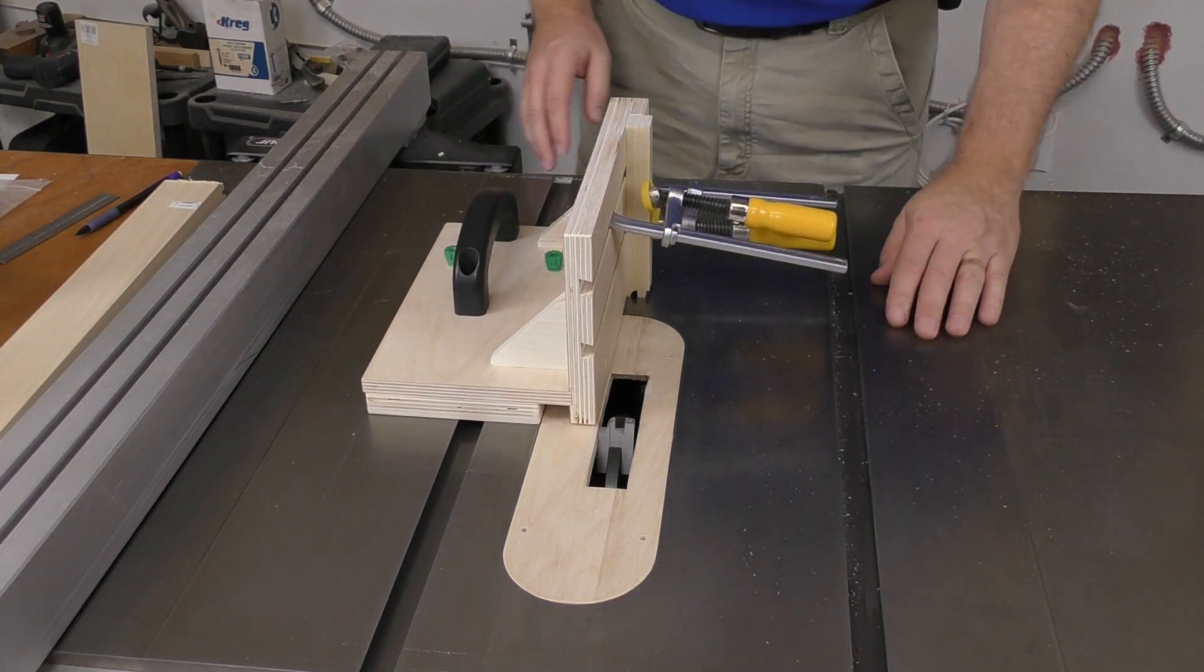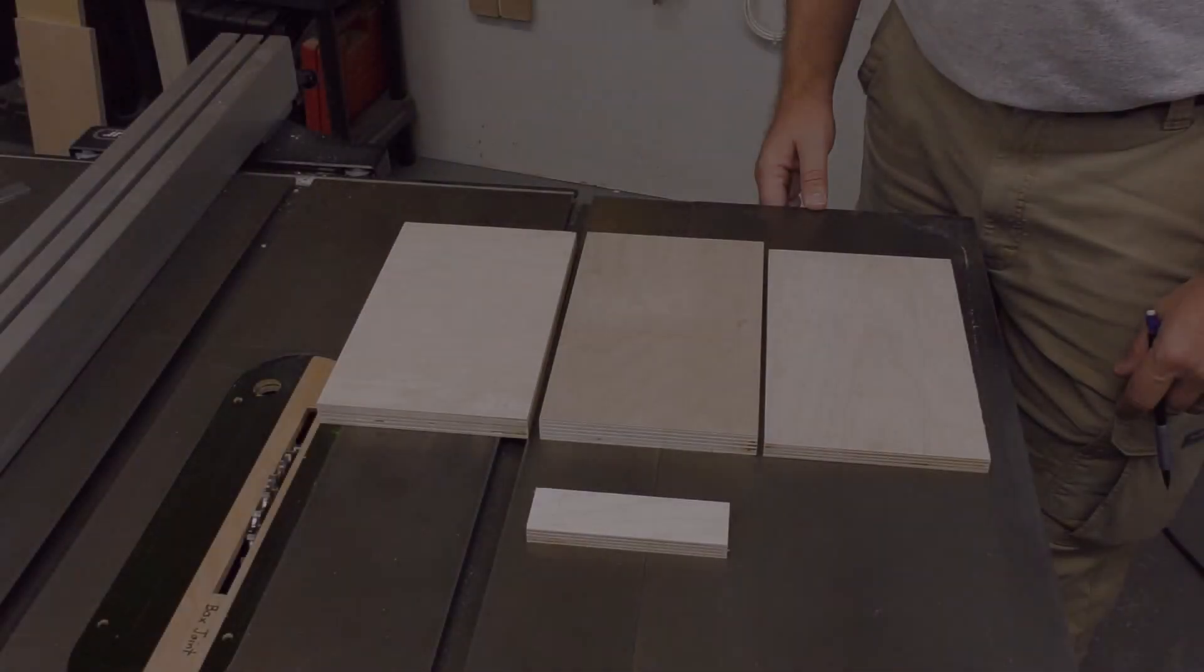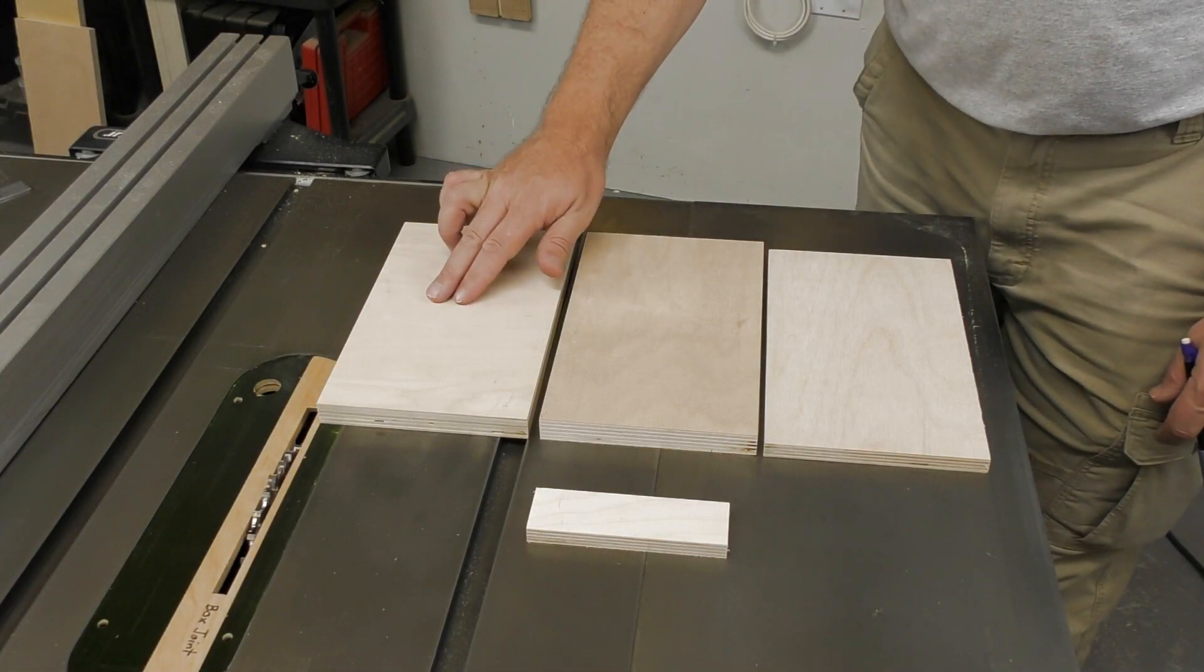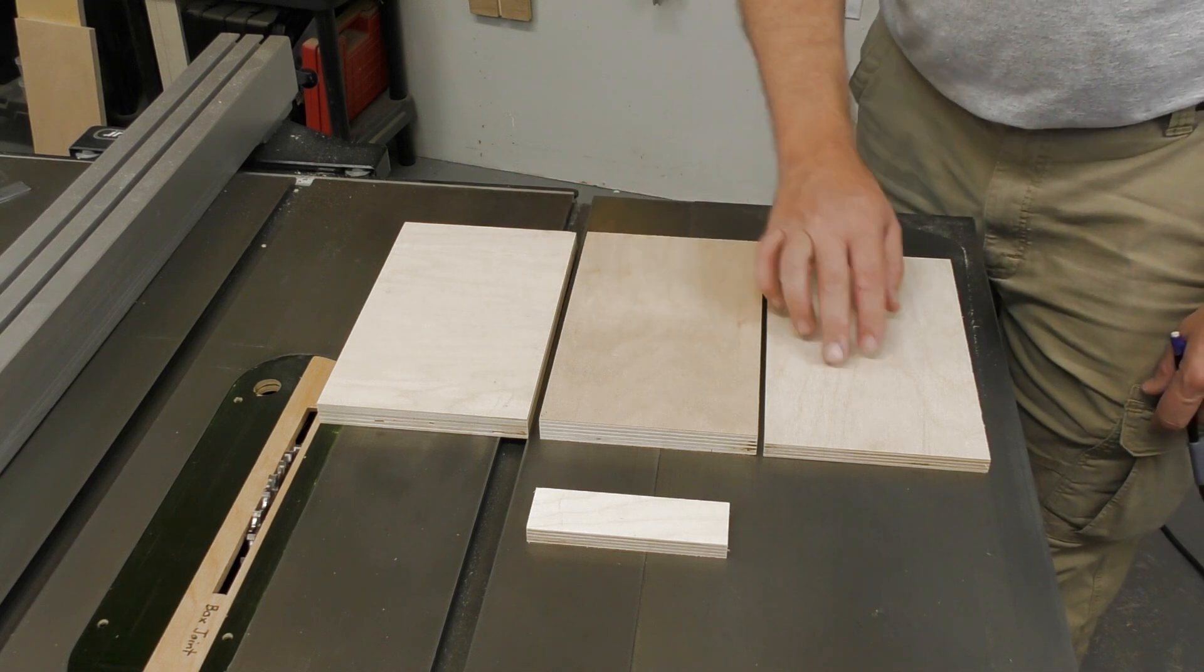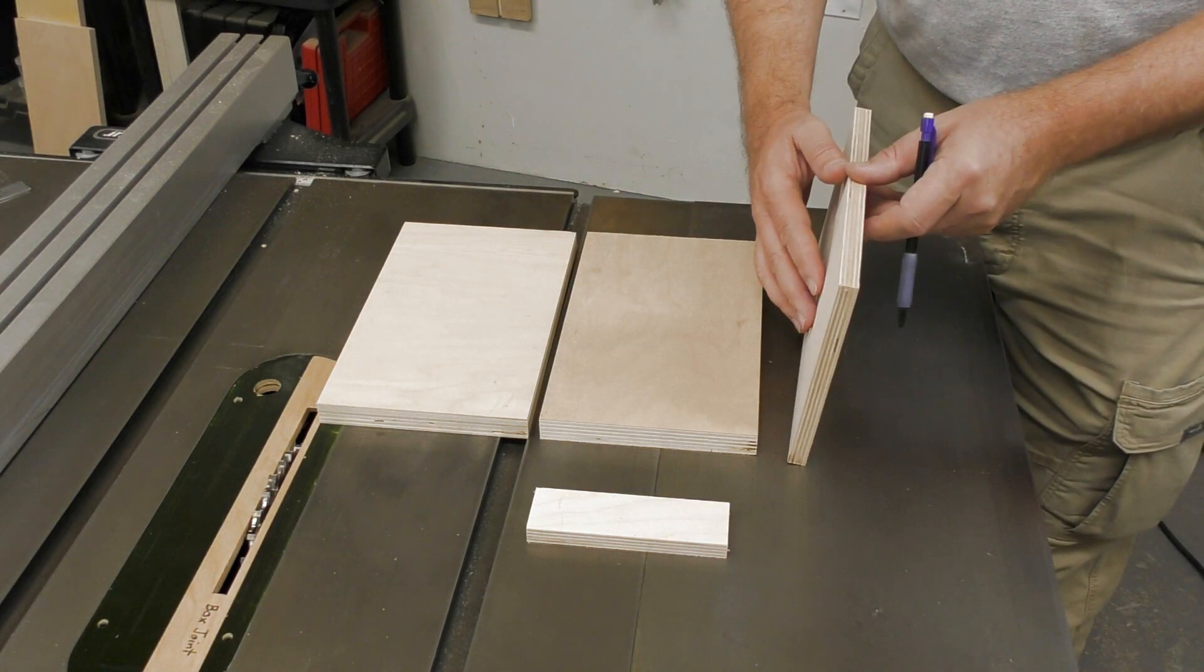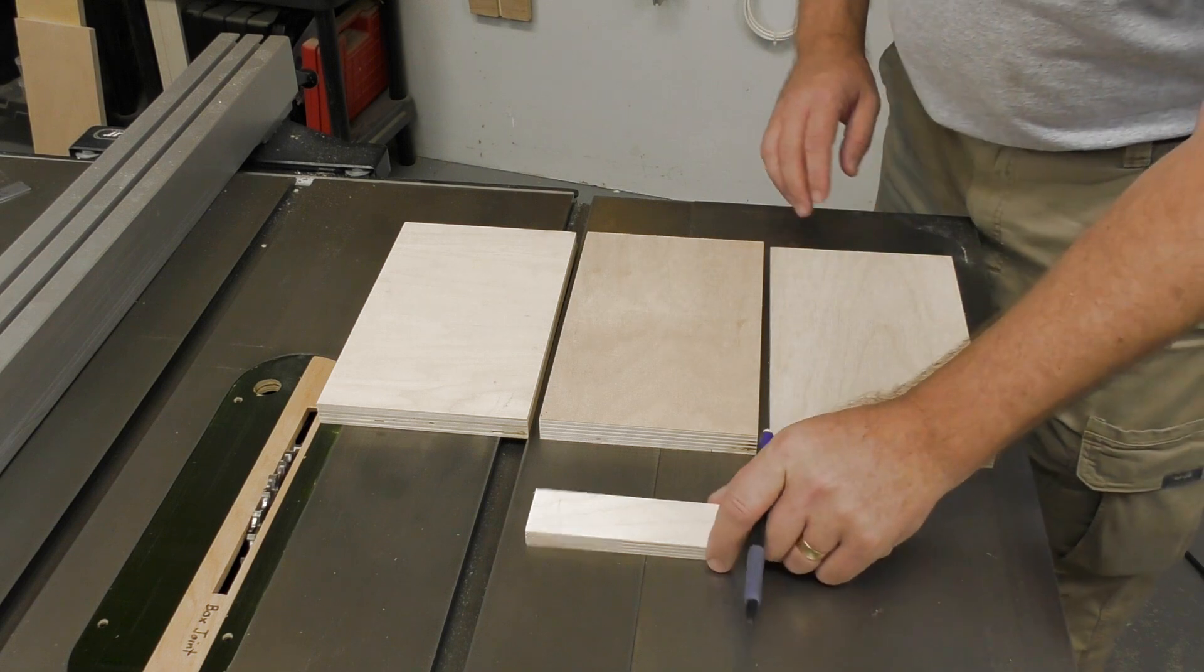Let's get started on the build process. You'll need three pieces of good quality plywood, 6 inches by 10 inches, and another small piece to form the vertical cleat.